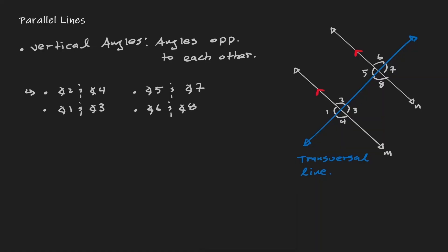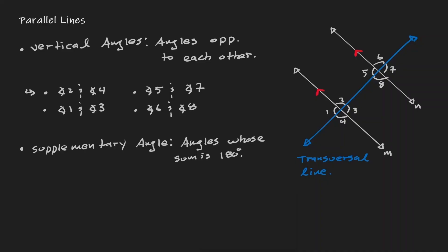It's not just vertical angles that are being created. We have also created supplementary angles. By definition, supplementary angles are angles whose sum is 180 degrees — in other words, they form a line. For example, if I add angle one and angle two, I'm essentially creating a line. Therefore, angle one and angle two are supplementary. Similarly, angle three and angle four are supplementary.